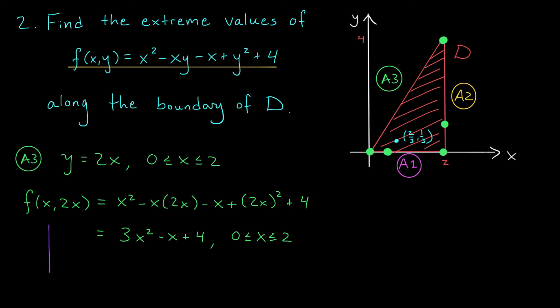To find the critical points, I take my derivative. I have f'(x,2x) equals 6x minus 1. This exists everywhere, and it's 0 when x is 1/6.